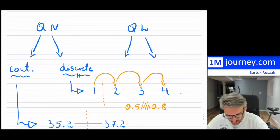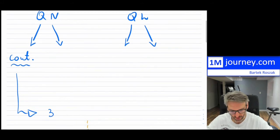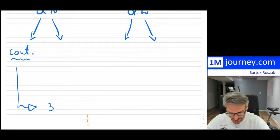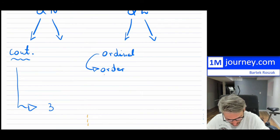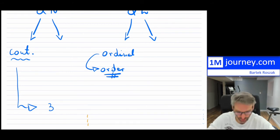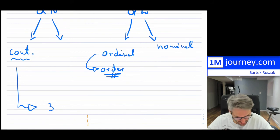When talking about qualitative variables, we also have two different sets. There is qualitative ordinal — meaning there is some order; you can arrange these in an order. And there is qualitative nominal — meaning there is no order.